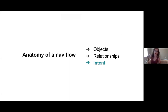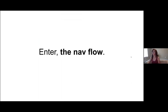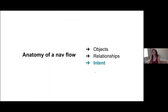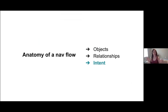What's the difference with the nav flow? They're made of three things: objects — the entities in the system, the concepts, the boxes; relationships — the lines in between them, how and why those two things are related; and the piece I often see missing — intent. Why intent? Before someone makes a decision, they have to make the decision to make the decision. There is sometimes a split-second decision and sometimes a long consideration between 'I think I want to do this thing' and actually doing it.